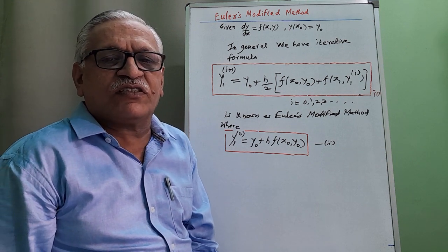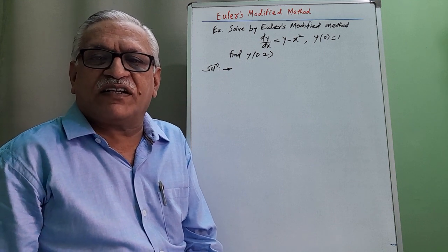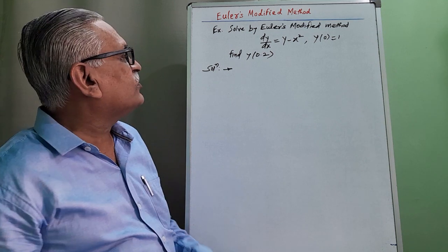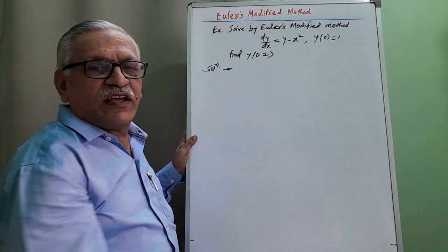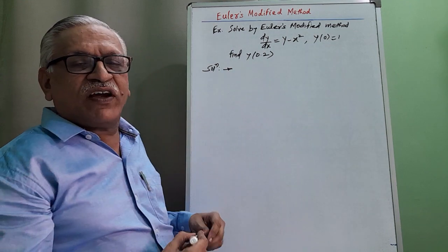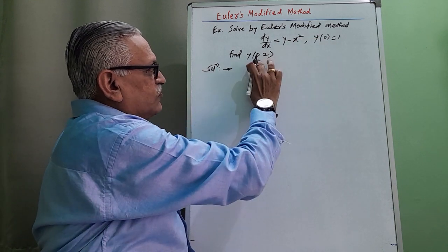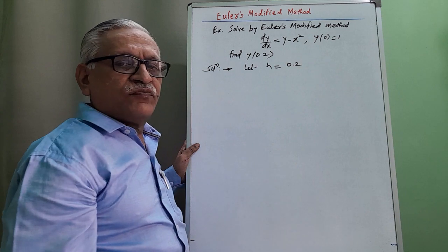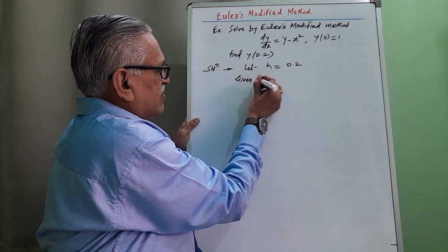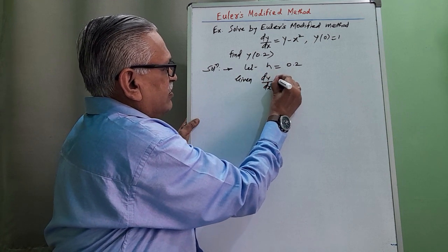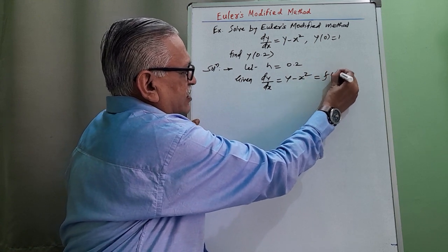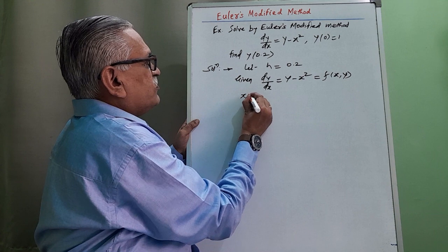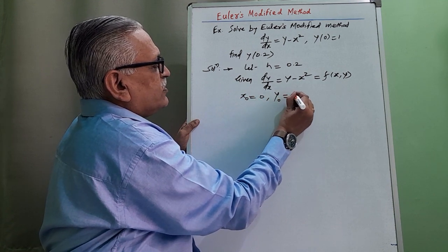Let us discuss one simple problem on Euler's modified method. Solve by Euler's modified method: dy/dx = y − x², with condition y(0) = 1, and find y at 0.2. To find y at 0.2 from y at 0, we consider h = 0.2. The given differential equation is dy/dx = y − x², which we call f(x, y). Initial condition: x₀ = 0 and y₀ = 1.